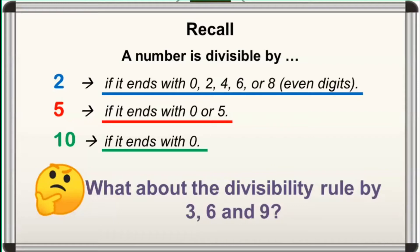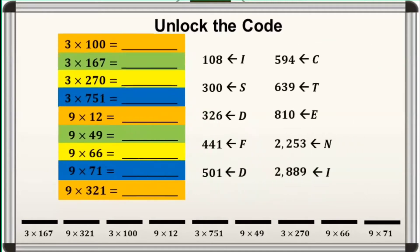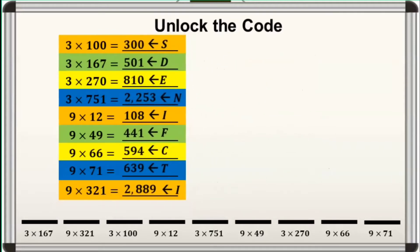What about the divisibility rule by 3, 6, and 9? We will discover them as we go on with our lesson. We'll start with this simple activity. Multiply the following. Each product has a letter paired to it that you are going to put on the blanks below until a mystery word will be unlocked. You may pause the video to have more time in answering. If you are already done, I'll show now the answers. I know you also got the same answers. With that, we can now unlock our mystery word. Our mystery word is disinfect.